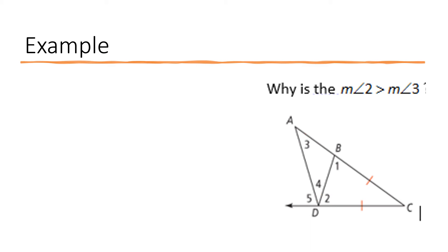Okay. Let's take a look at these triangles. Here's angle three. And here is angle two. So we need to decide why angle two is greater than the measure of angle three.